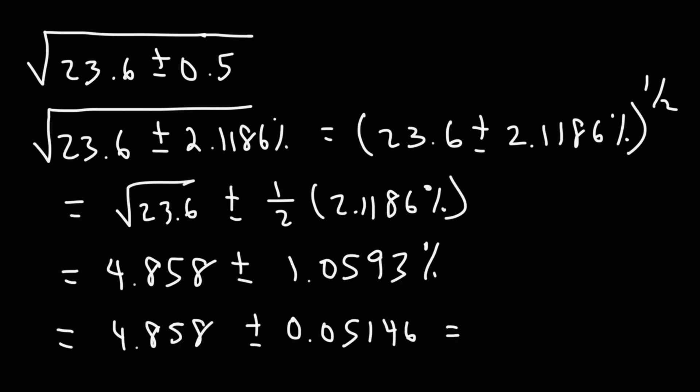So now let's do some rounding. Our measured value has three significant figures, so let's round that to three sig figs. We can round that up to 4.86. This has only one digit, so we can round this down to 0.05. So this is our answer.